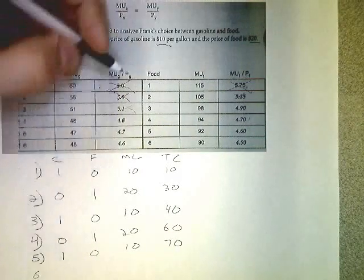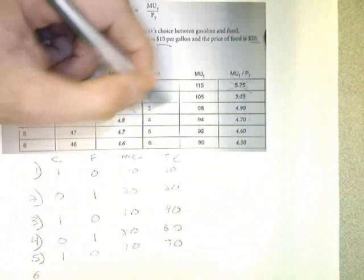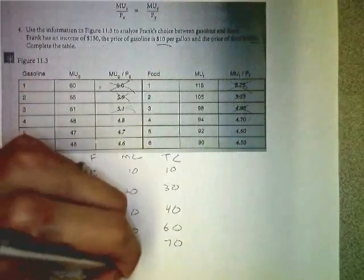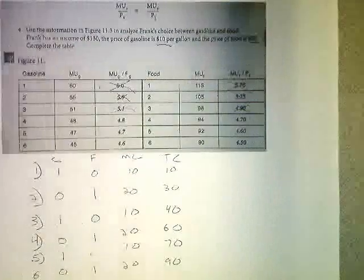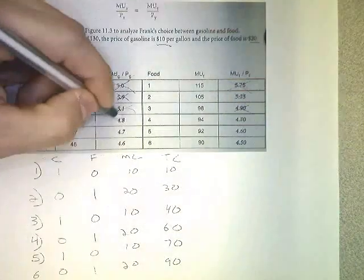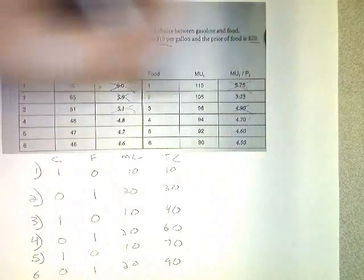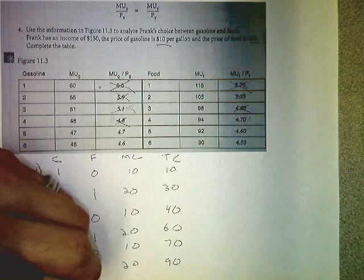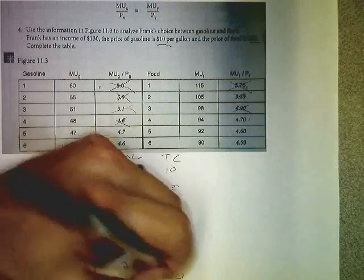For his sixth decision, he buys food because, again, higher marginal utility per dollar. So that's going to cost him $20. He's up to $90. Next decision, gasoline again, because the $4.8 is higher than $4.7. And he's up to $100.